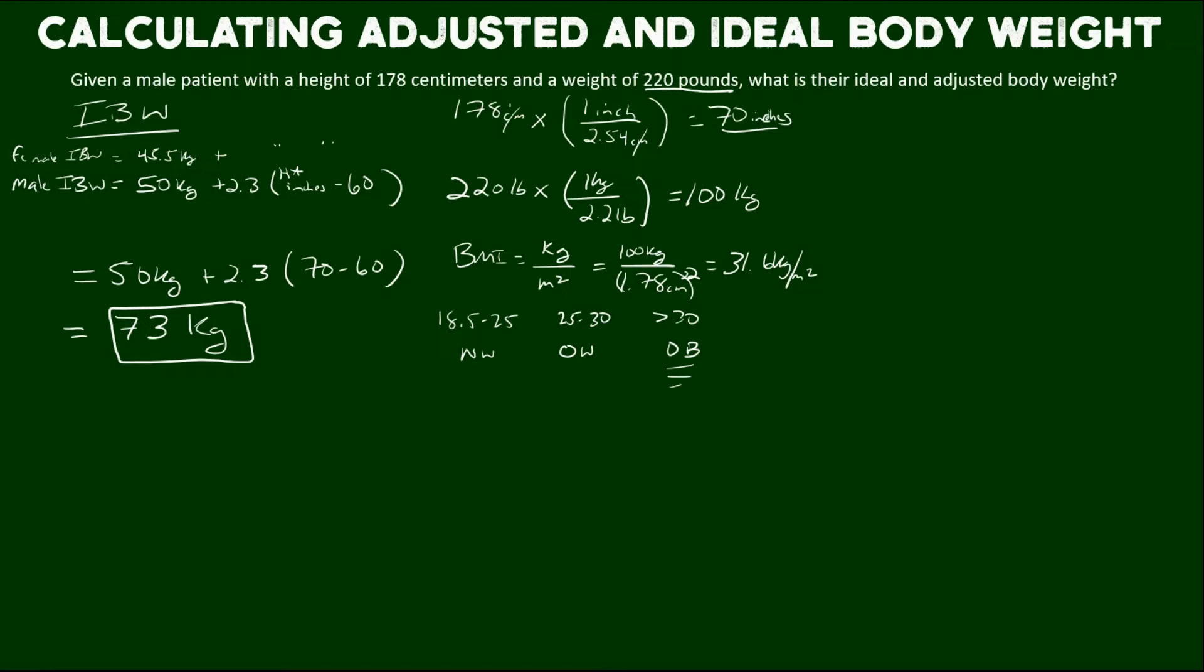So we've calculated their ideal body weight. Let's look at how to calculate their adjusted body weight. And that's with the following equation. And what adjusted body weight is, is what it says it is. It's really an adjustment usually used in certain dosing or pharmacokinetic scenarios where a patient has a very high BMI.